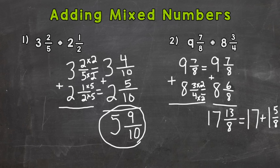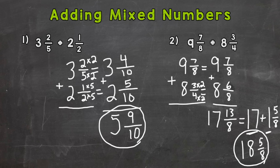So thirteen-eighths equals one and five-eighths. We want to combine our whole numbers: that's seventeen and that one whole, so our answer is actually going to have eighteen wholes. We don't want to forget about the five-eighths, so eighteen and five-eighths is our final answer for number two.